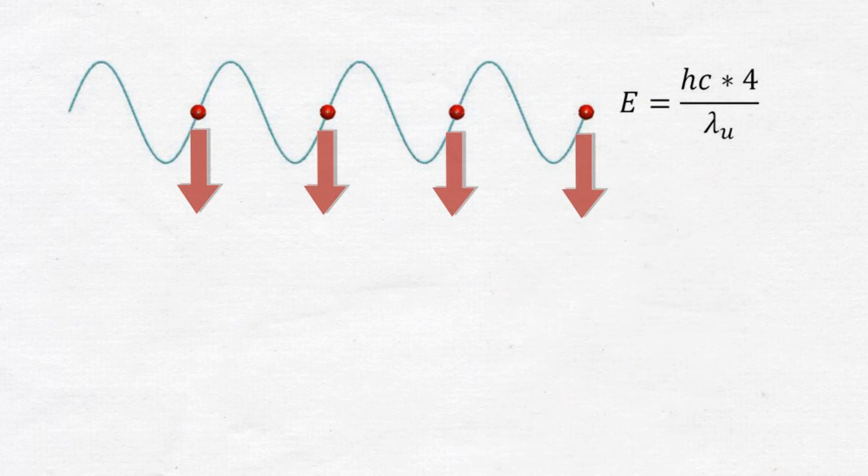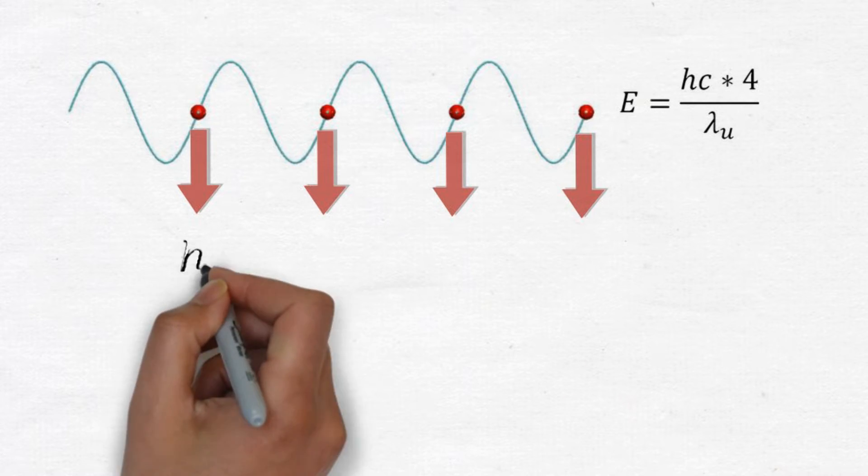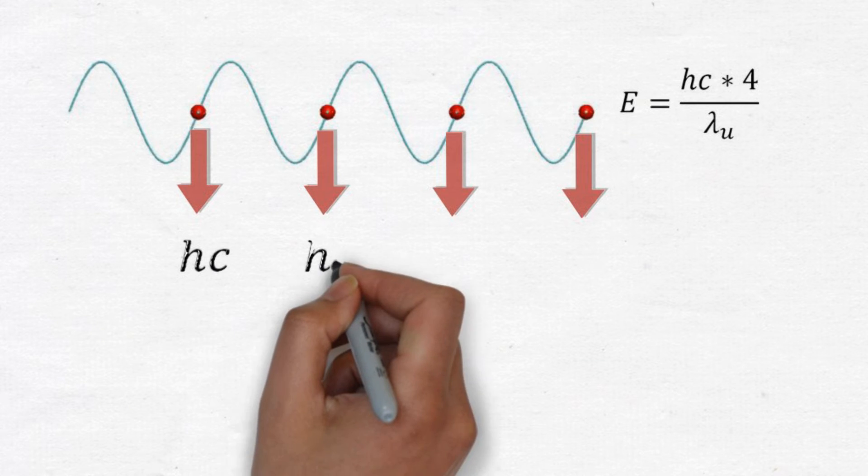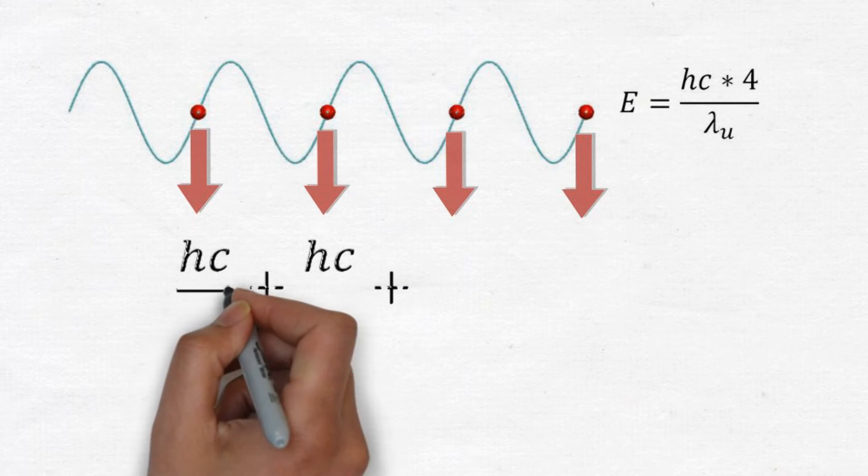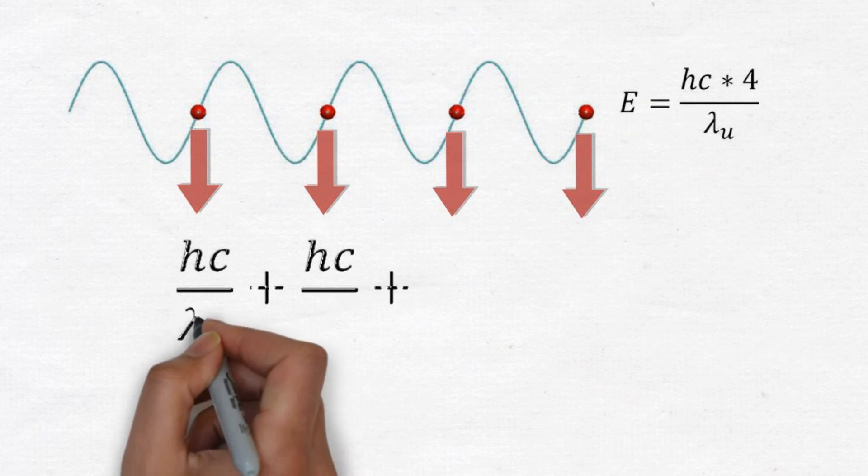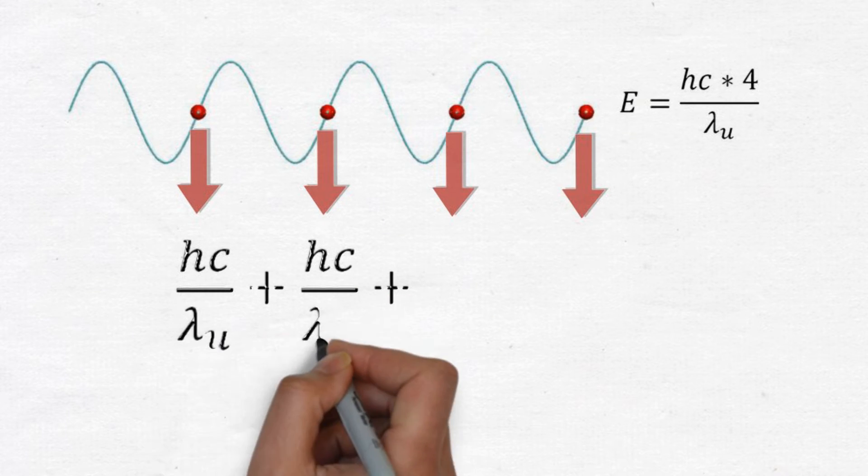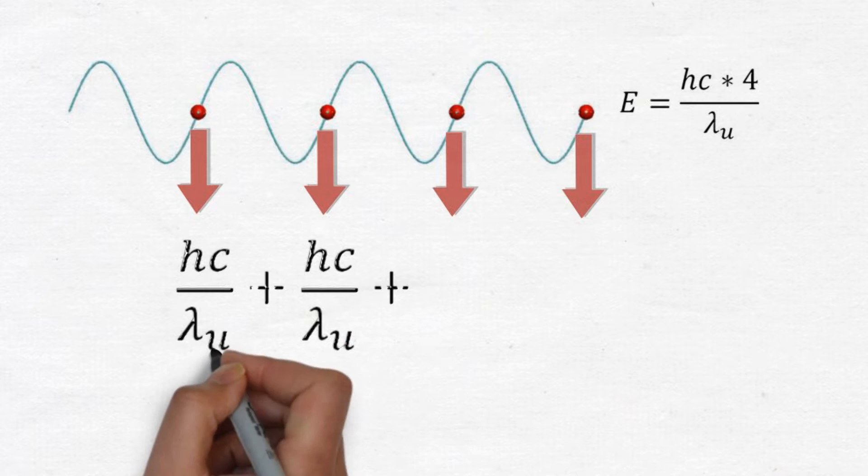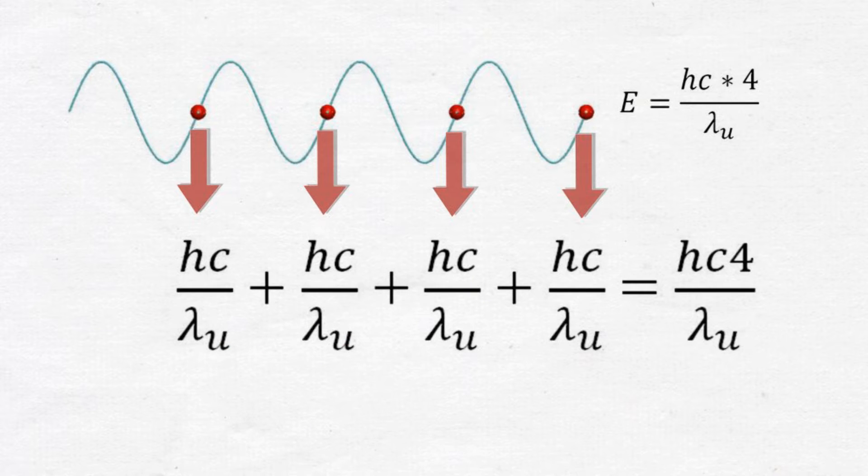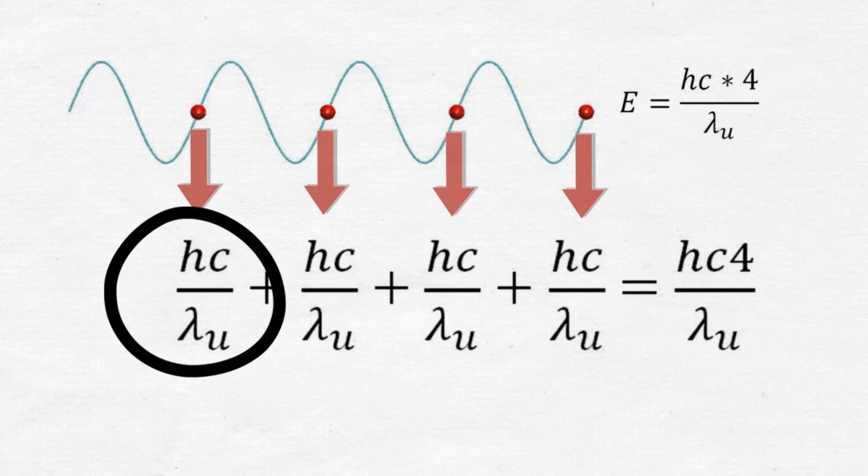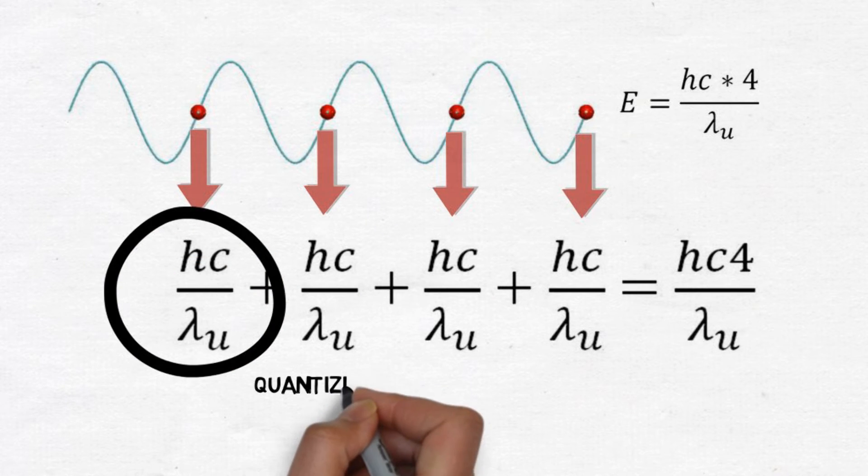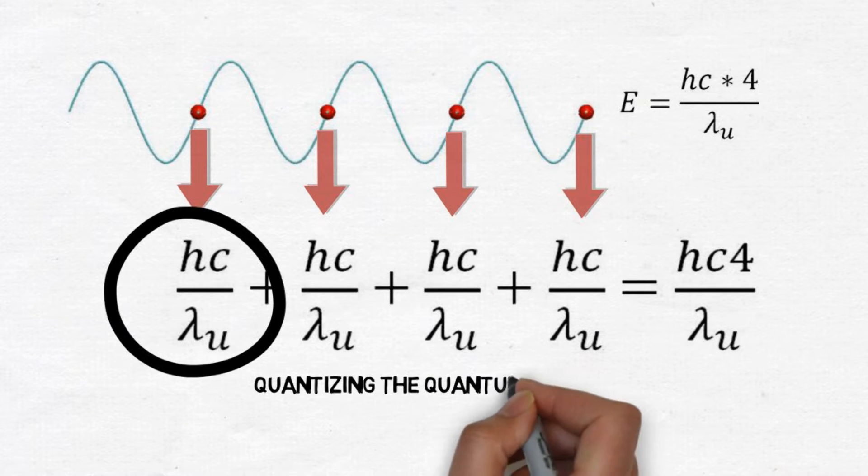In creating this quantized Planck's law equation, we have essentially quantized the quantum by creating the smallest unit of energy possible whereby all measured energy values are simply an integer multiple of this tiniest bundle of allowed energy. This also has the effect of eliminating all those nasty singularities where our classical equations blow up when things approach zero. The fact that nature doesn't seem to blow up is further evidence that some minimal quanta likely does exist.